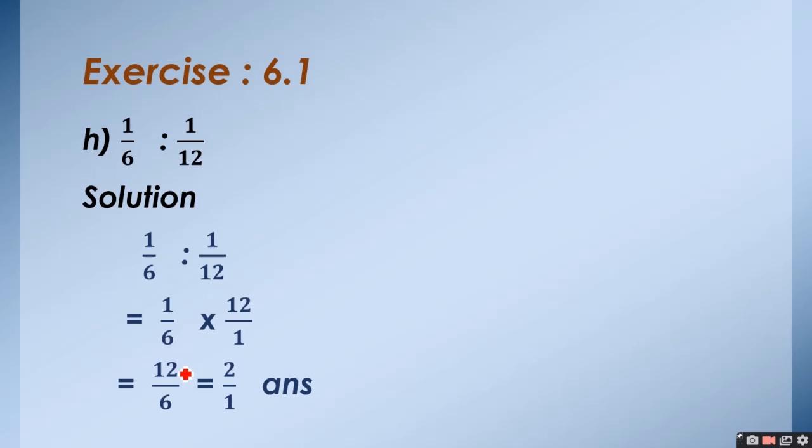Now, 12, 1 is 12 and 6 is 6. We have 12 upon 6 and when we reduce it, it will be 6 upon 6 and 6 to the 12. So, 2 upon 1 or you can say that 2 ratio 1.